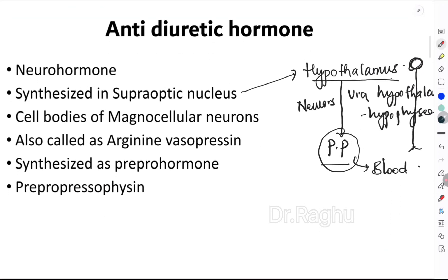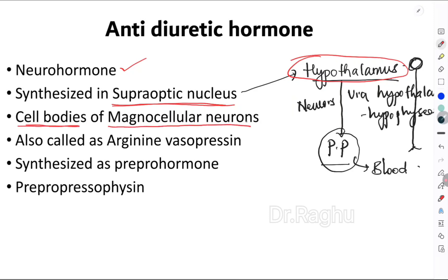ADH is also called AVP or arginine vasopressin. It is a neurohormone synthesized in the supraoptic nucleus, which is present in the hypothalamus. More specifically, it is synthesized in the cell bodies of neurons called magnocellular neurons. Once synthesized in the hypothalamus, it is transported via neurons into the posterior pituitary through the hypothalamo-hypophysial tract.